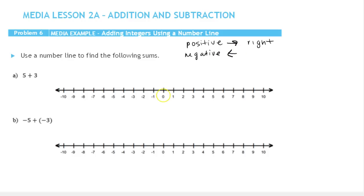Just like positive numbers are to our right and negative numbers are to our left, we're going to use this same idea when we're using the number line. So let's start with the first one. We're going to start at 0, and then we have 5 plus 3.